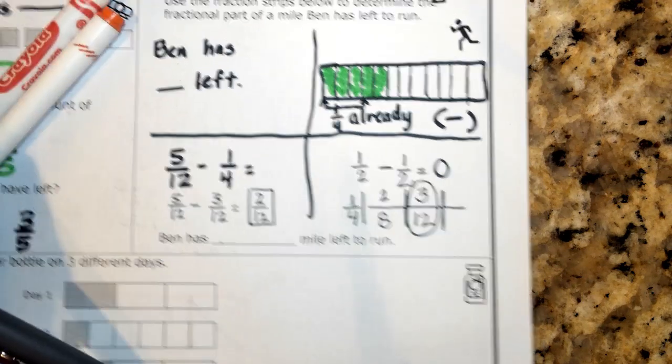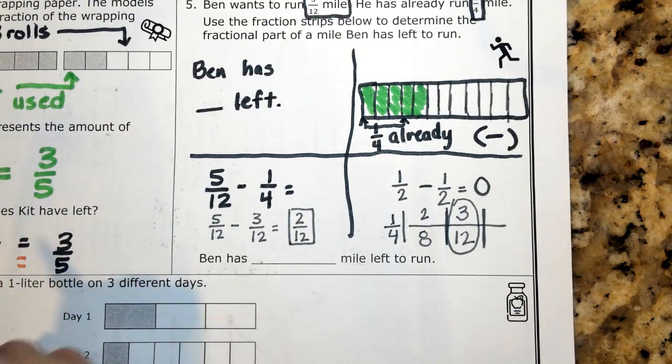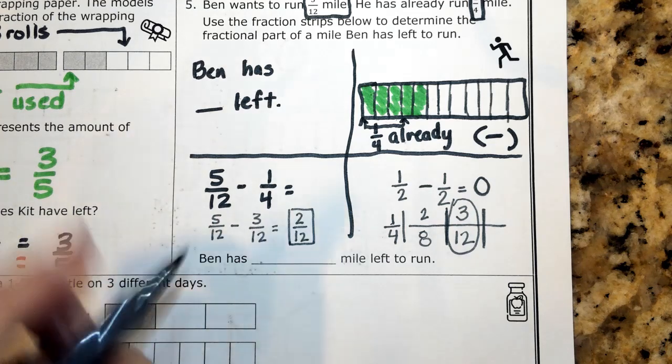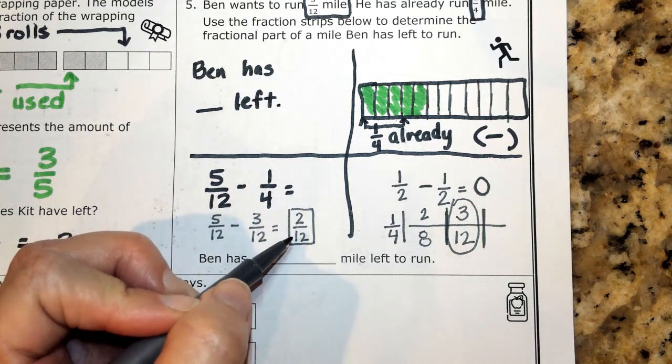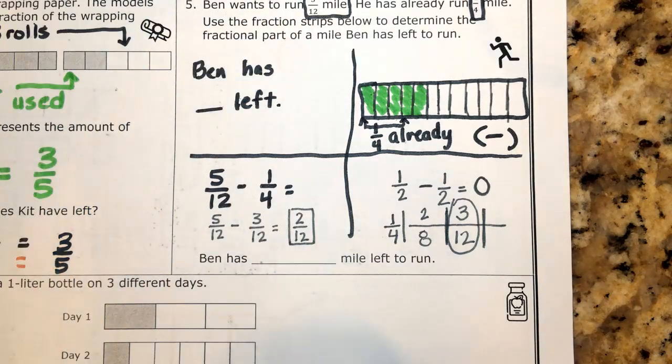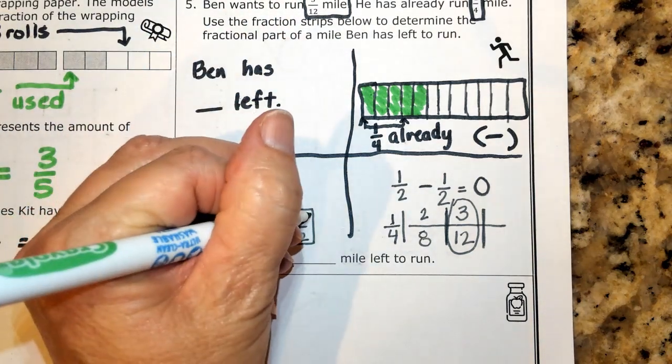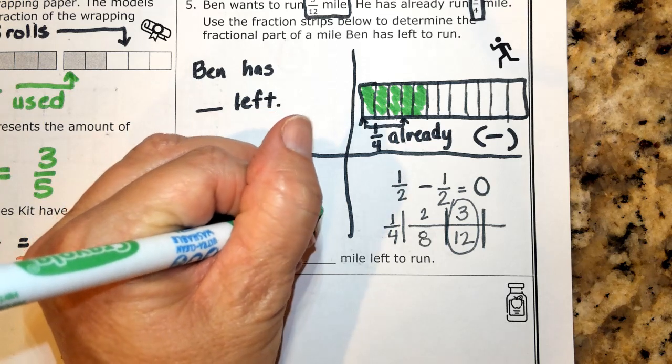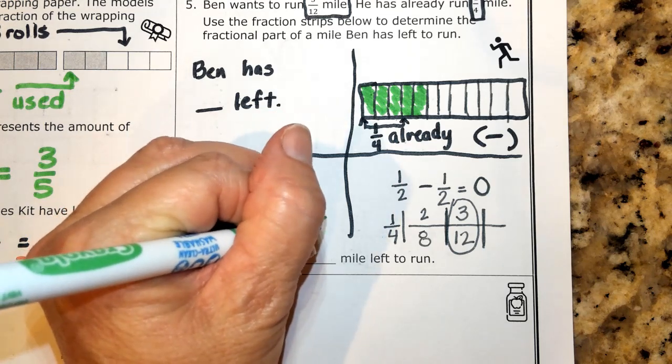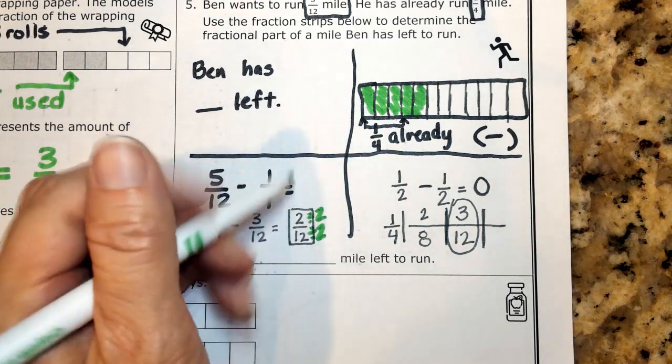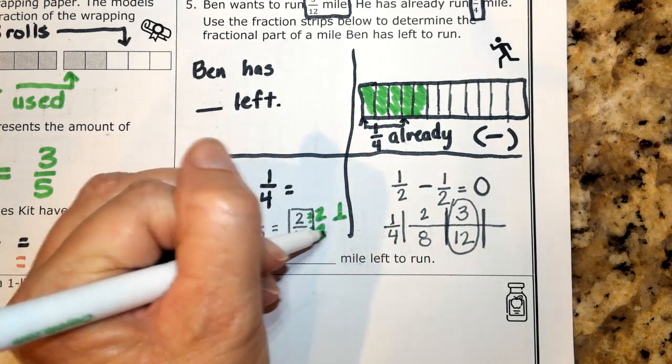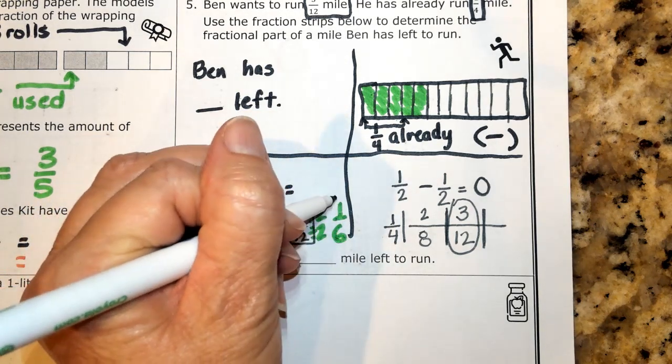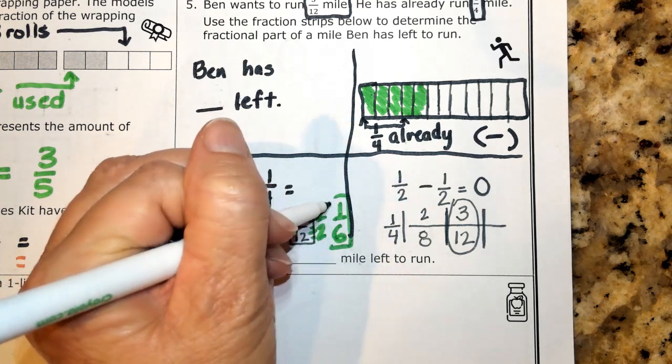One last thing I have to decide is, is this in lowest terms? Well, right away, I should notice that two is even and so is 12. So both of these could be cut in half by the number 2. So I can divide by my friendly number 1 in the form of two halves. And if I cut two in half, I get the number 1. And if I cut the number 12 in half, I get the number 6. So the amount that's left is 1 sixth.